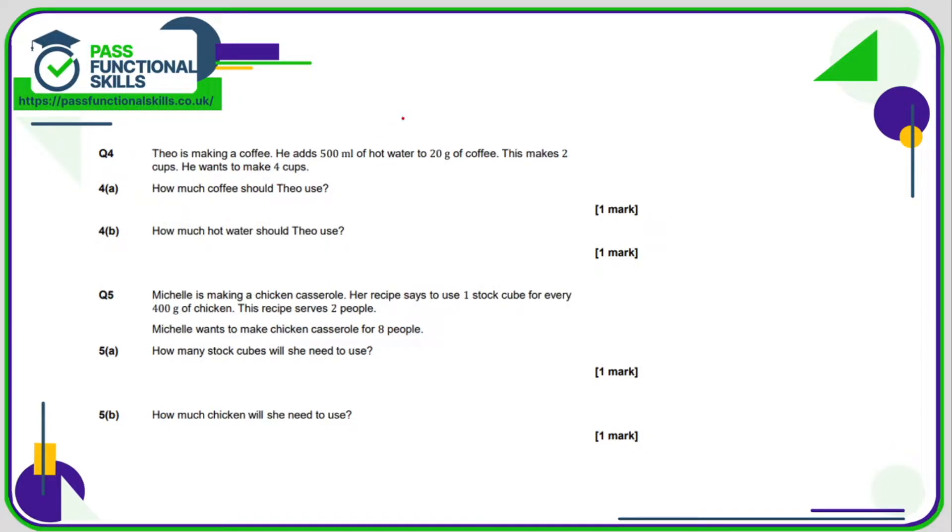Theo is making coffee. He uses 500 milliliters of water for 20 grams of coffee, and that is for two cups. So he's making four cups, which is double the number of cups, so he's going to need double the coffee, which is 40 grams, and double the water. Two times 500 is 1000 milliliters, otherwise known as one liter.